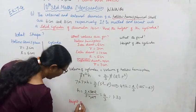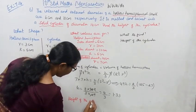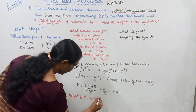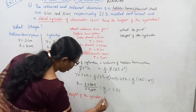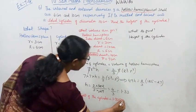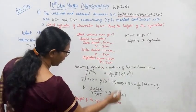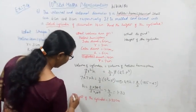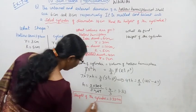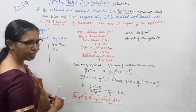Therefore, the height of the cylinder is equal to 1.33 cm.